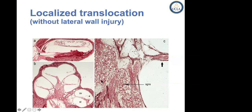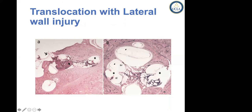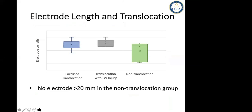This is histology from a patient who had very limited translocation within the cochlea. As demonstrated here, the morphology of spiral ganglion neurons is quite good. When you compare this to a situation where cochleostomy was done and you see much more global injury with involvement of the lateral wall, the morphology is quite different. What was interesting was when we systematically analyzed the patterns of injury, we found that when the electrode was less than 20 millimeters, there was not a single case of cochlear implant electrode translocation.